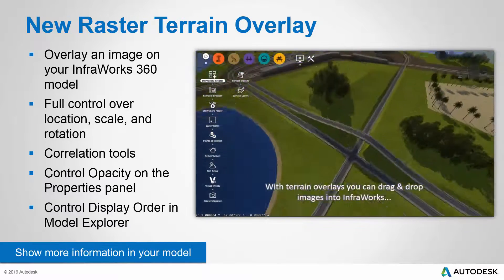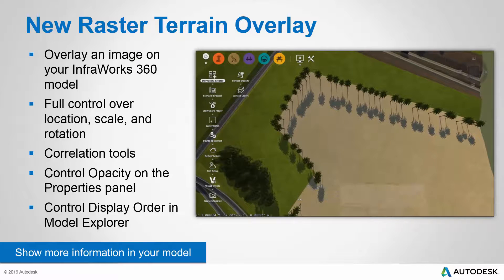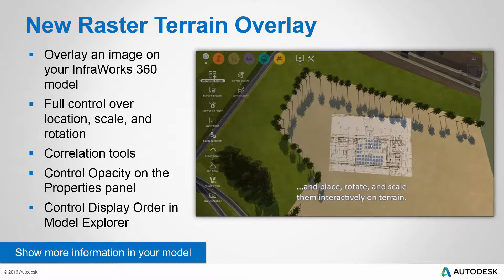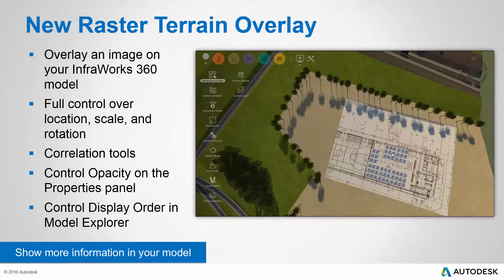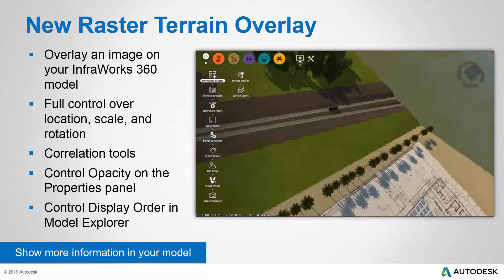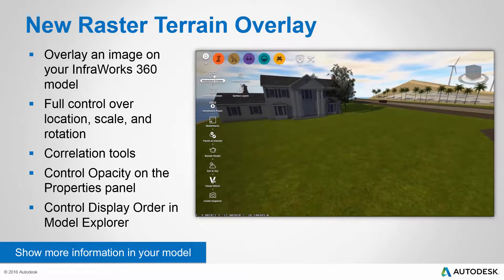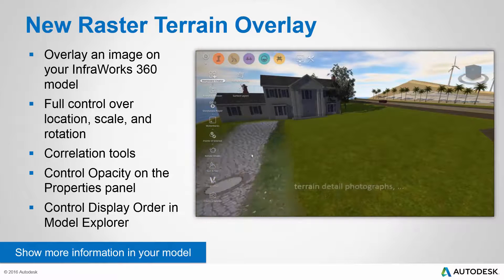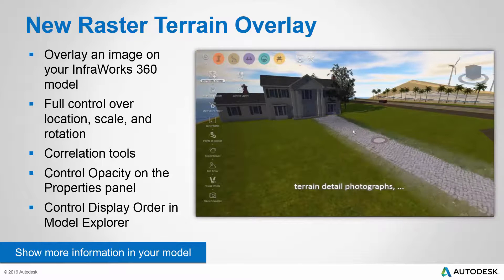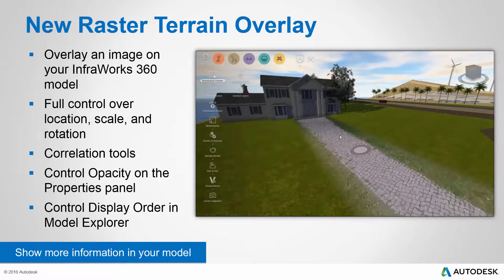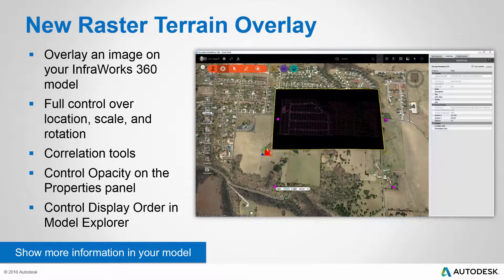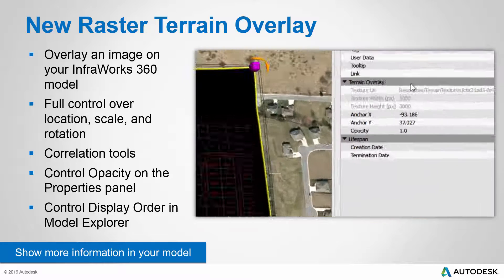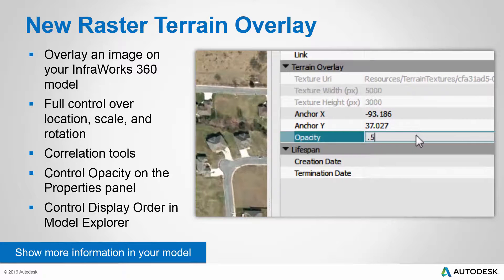A very exciting new addition is something called a Raster Terrain Overlay. This allows you to overlay just about any image on your InfraWorks 360 model, giving you full control over location, scale, and rotation. If you've ever tried to do this in a prior release, it was a little tough to get it oriented and rotated just where you need it. As you can see in the video, you can grab just about any image and place it anywhere in the model. In fact, we're going to use some correlation tools to take a screen capture from Civil 3D and position it right on our InfraWorks 360 model.